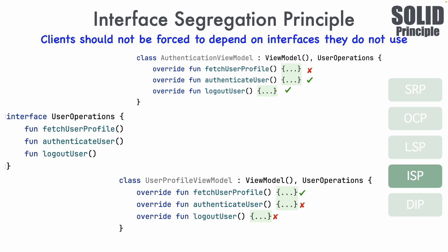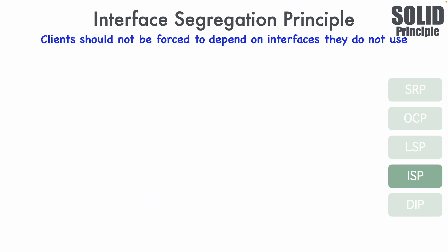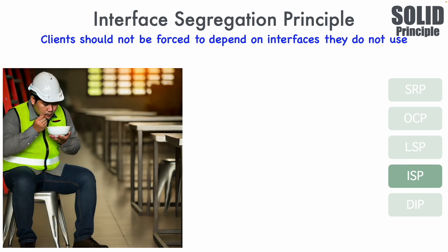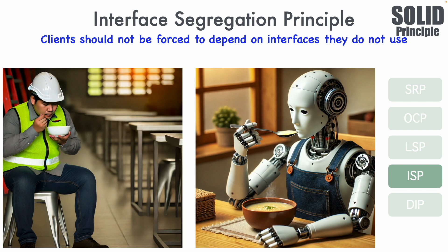To really nail the point: imagine a Worker interface that has an eat function. For a HumanWorker this looks perfectly fine. But what if it is a RoboticWorker? A robot eating doesn't look right. When creating an interface initially it may seem well-suited, but pay attention — you might inadvertently create situations where a robot ends up drinking soup. So that's it for this video.